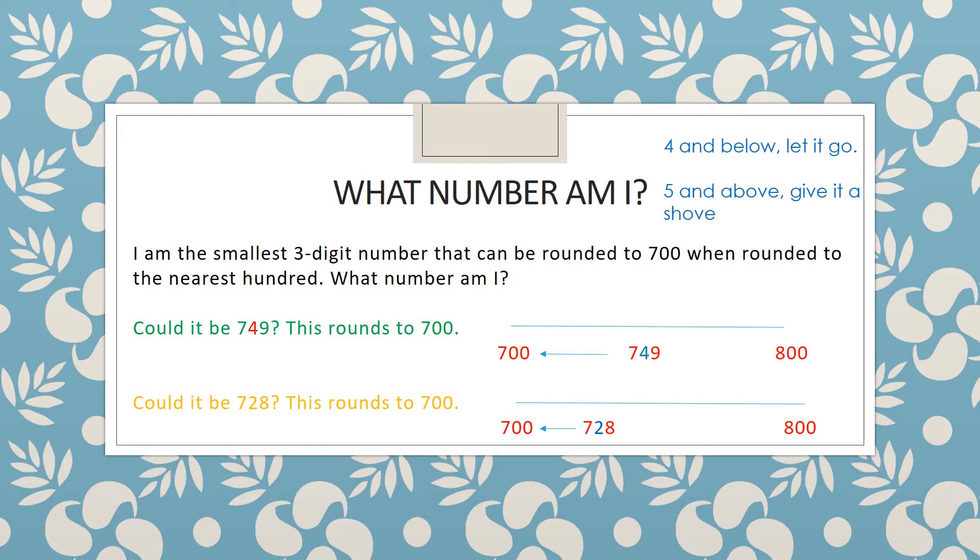So 749 has four tens, 4 and below let it go so it rounds down to 700. 728 has got two tens so 4 and below let it go it is rounded down to 700.